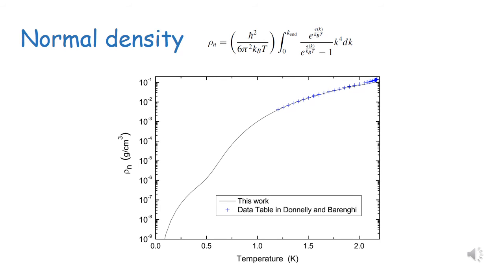Here I show another example of what can be calculated in the thermodynamical properties. This is the normal density and, in particular, the normal density at low temperatures, which is a useful quantity.